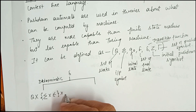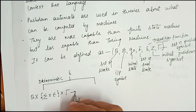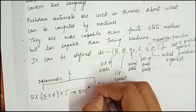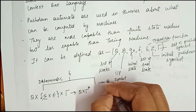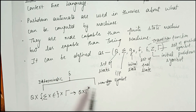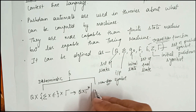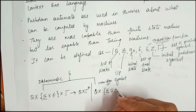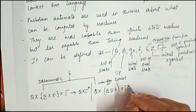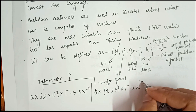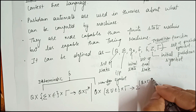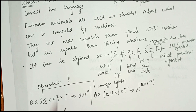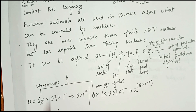For a non-deterministic PDA, the transition function is: δ: Q × (Σ ∪ {ε}) × Γ → 2^(Q × Γ*). This is how we define the transition function for deterministic and non-deterministic PDA. A PDA reads the input symbol and stack symbol from the top of the stack, moves to a new state, and changes the symbol on the stack.